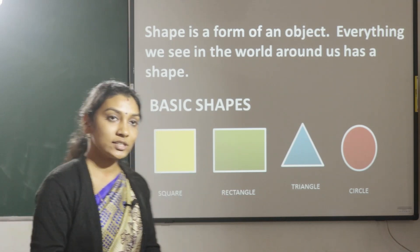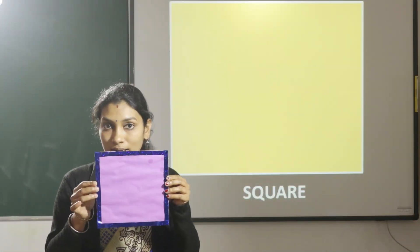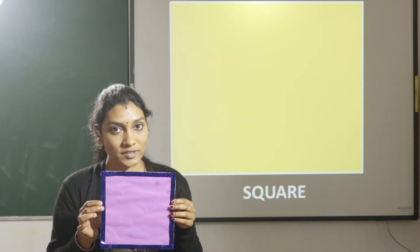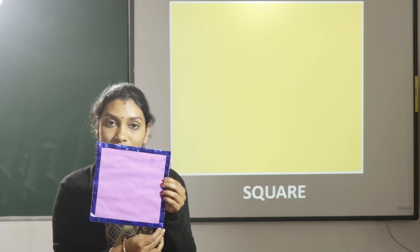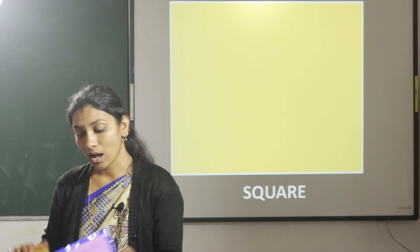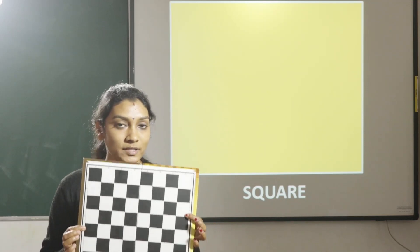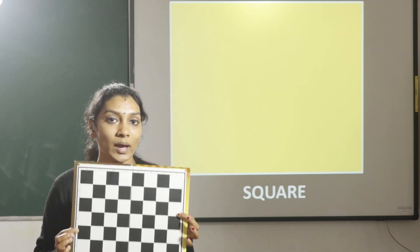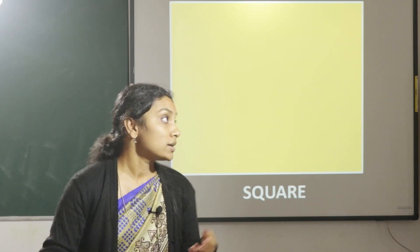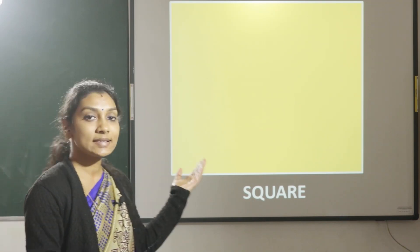Now let us see the shape of a square. A square has four sides — one, two, three, four. All the sides in a square are equal. Here I have an example: this is a chess board. So what is the shape of this chess board children? It is a square shape. All the sides in a square are equal and it has four sides.